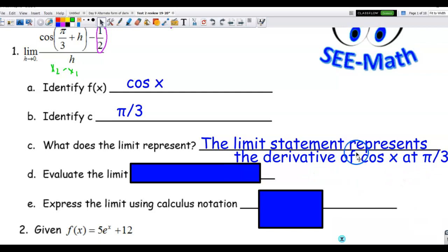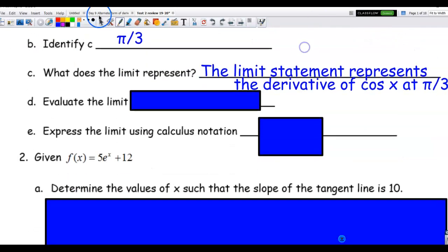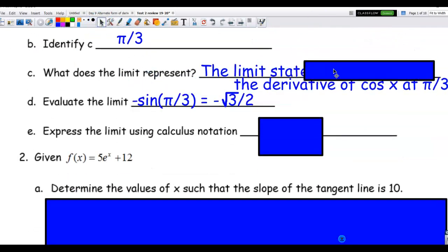And then to evaluate the limit, we're actually going to find the derivative of cosine of x. We know that the derivative of cosine of x is equal to negative sine x, and then we're going to evaluate that at pi over 3. So negative sine of pi over 3, or 60 degrees. So that limit from our trig days is going to be negative root 3 over 2.